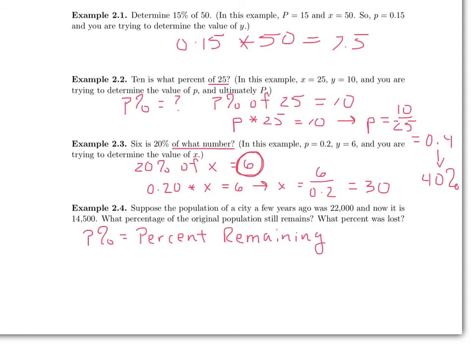Now, we are told that 14,500 people are still residing in the city. So, if we took p%, in other words, the percentage remaining, if we took p% of 22,000, we should get how many people are still there, which is 14,500. Let's write this as an equation. p% written as a decimal, that's the little p. We take little p times the 22,000, and we set that equal to the 14,500.